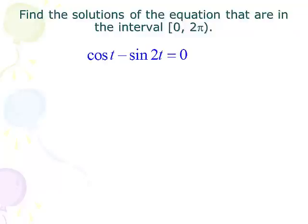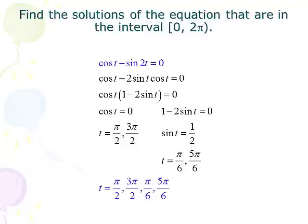Here's our first problem. Find all solutions to the equation in the interval [0, 2π]. We have cos t - sin 2t = 0. The problem we have here is we have 2t and t, so we're going to take out the sine 2t and substitute it with the double angle formula for sine. So I take out sine 2t and I put in its place 2 sin t cos t.